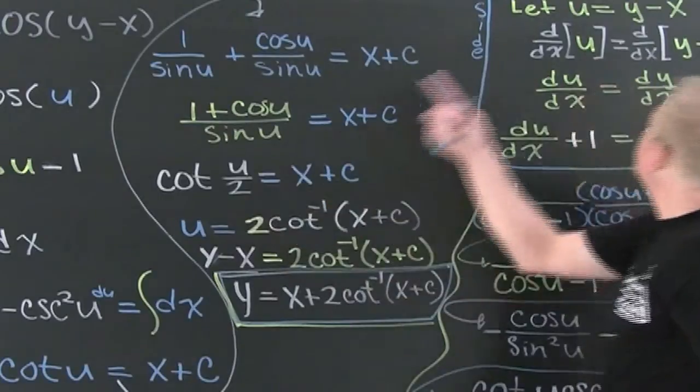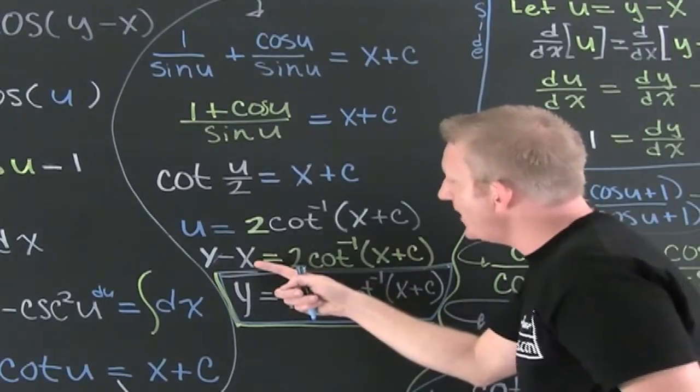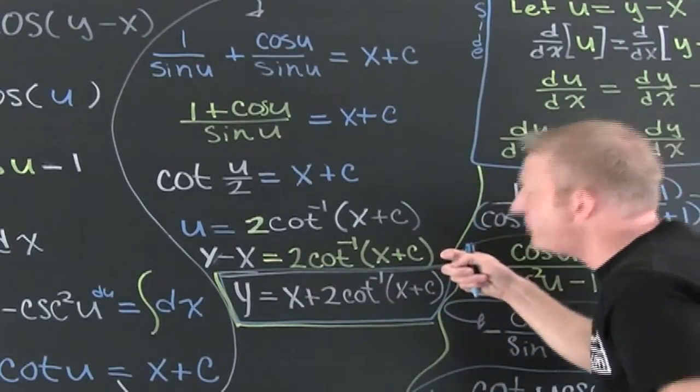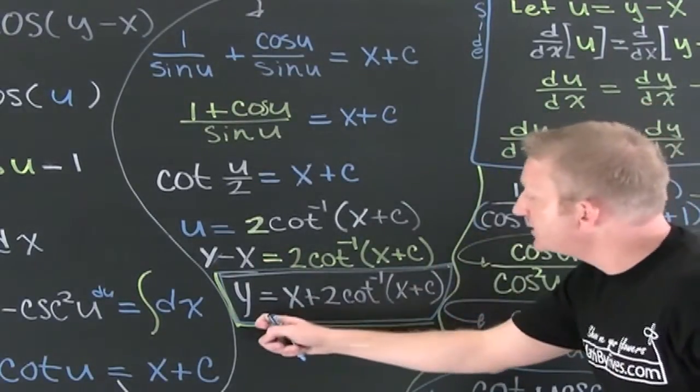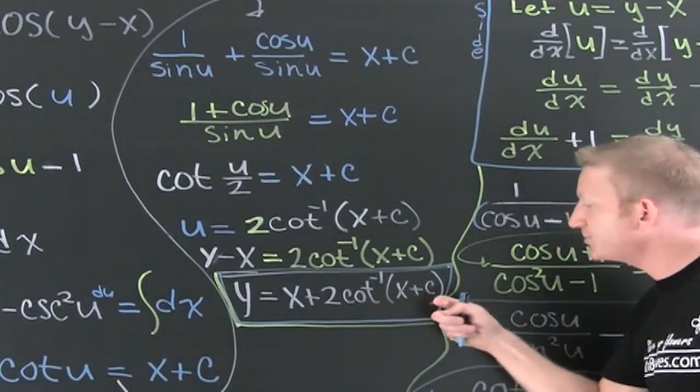My u was y minus x. So I have y minus x equals this guy. Y ends up being x plus two times the cotangent inverse of x plus c.